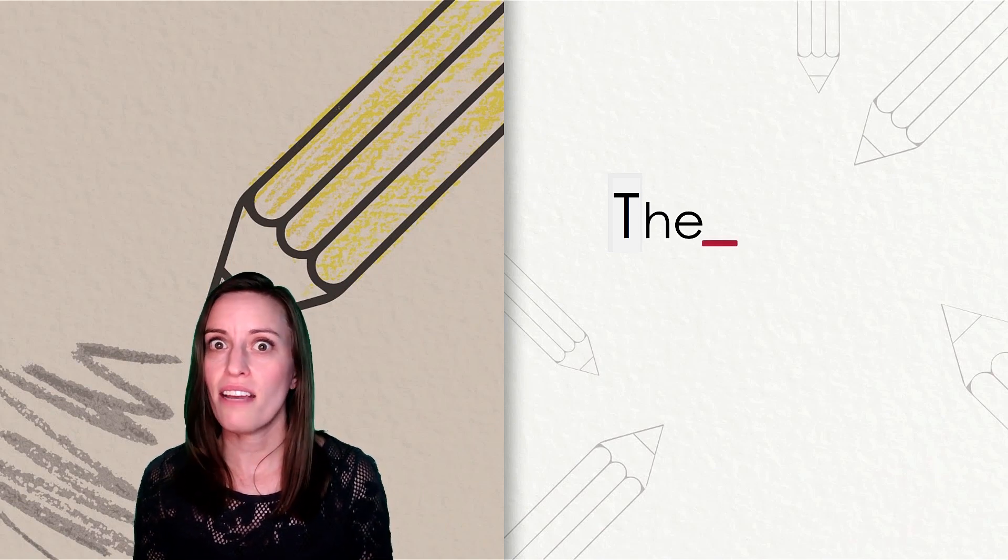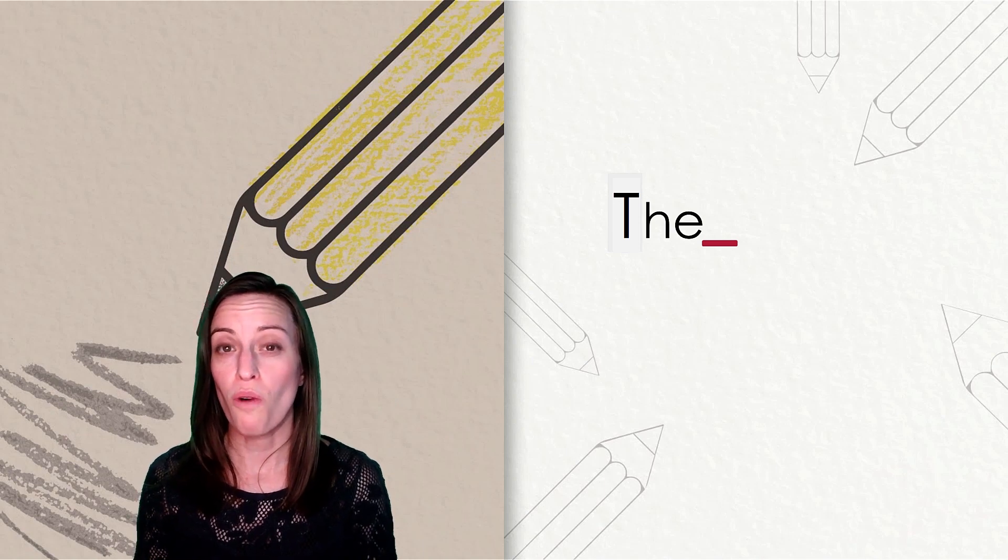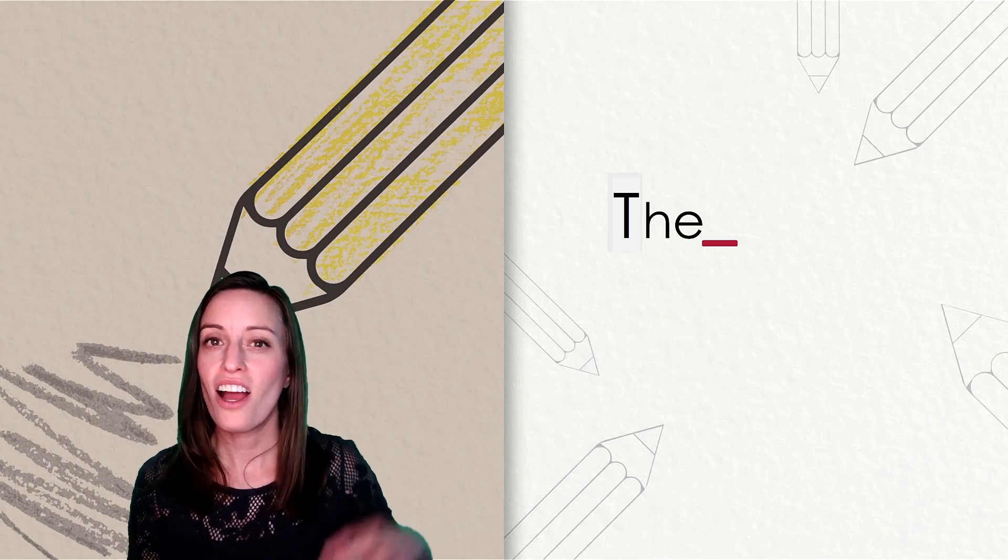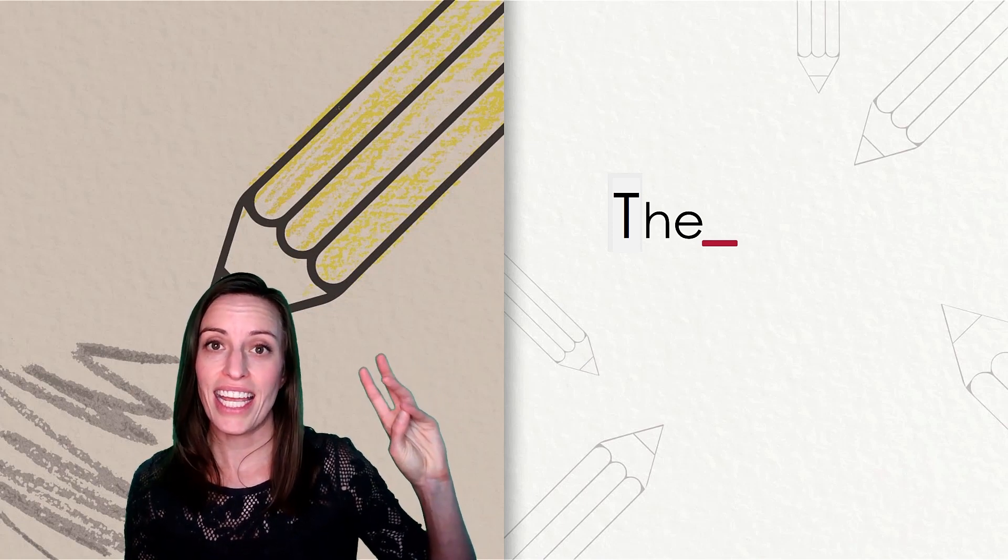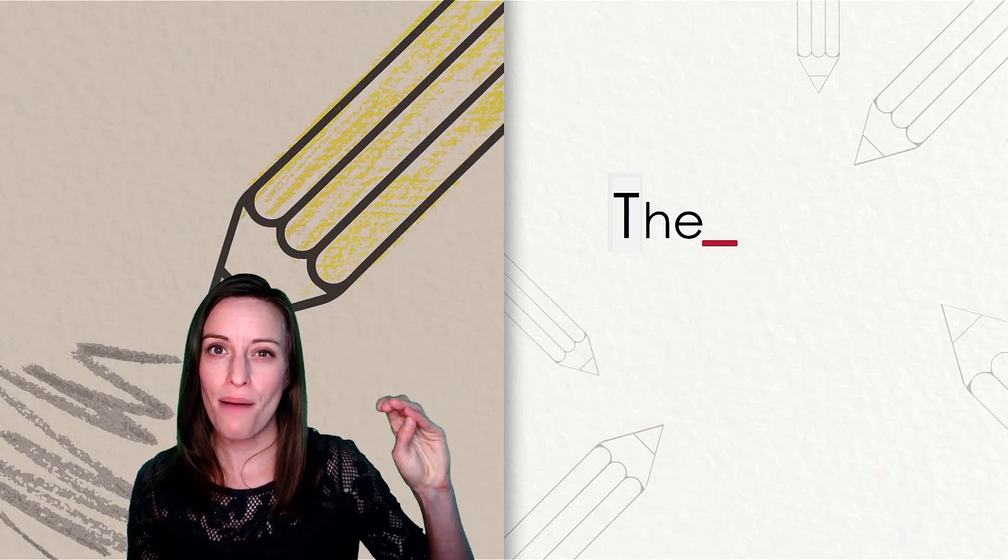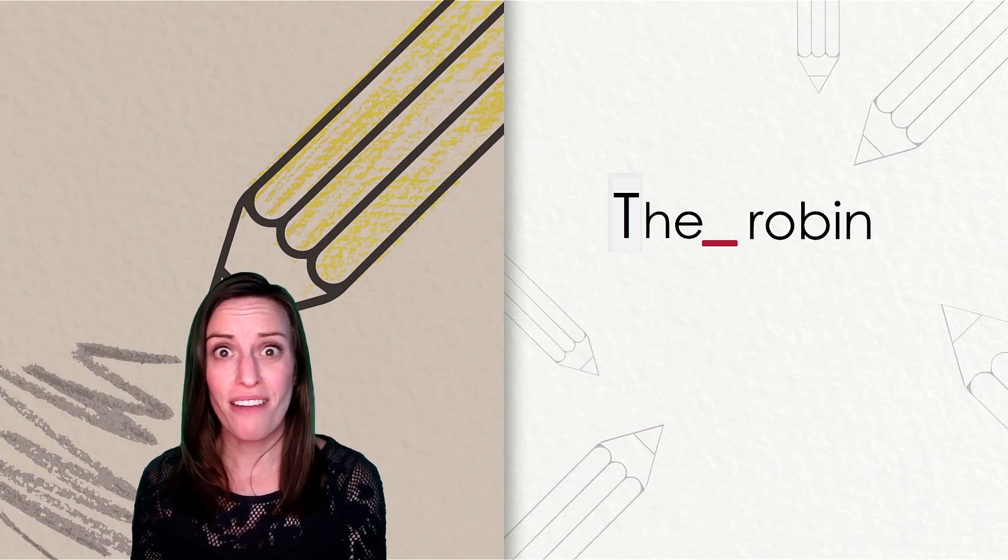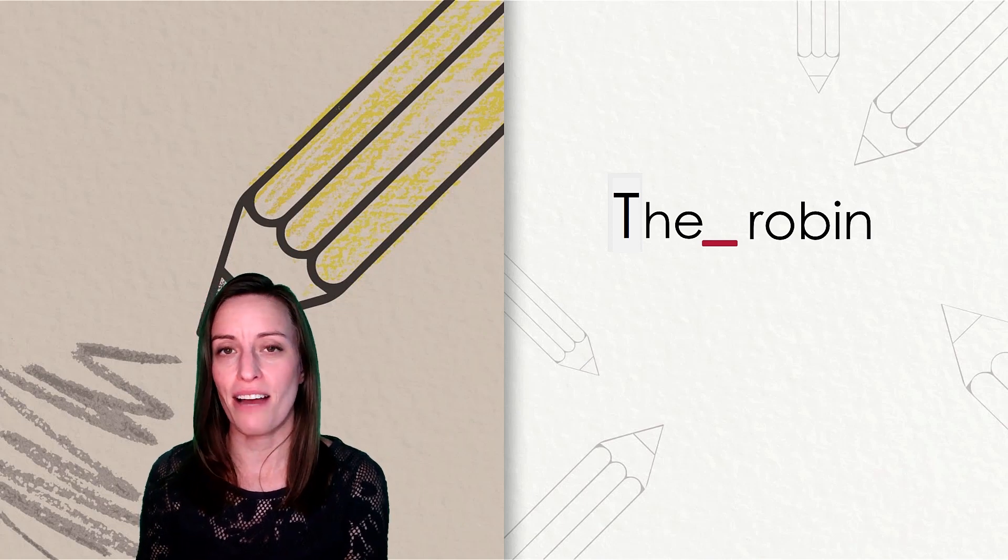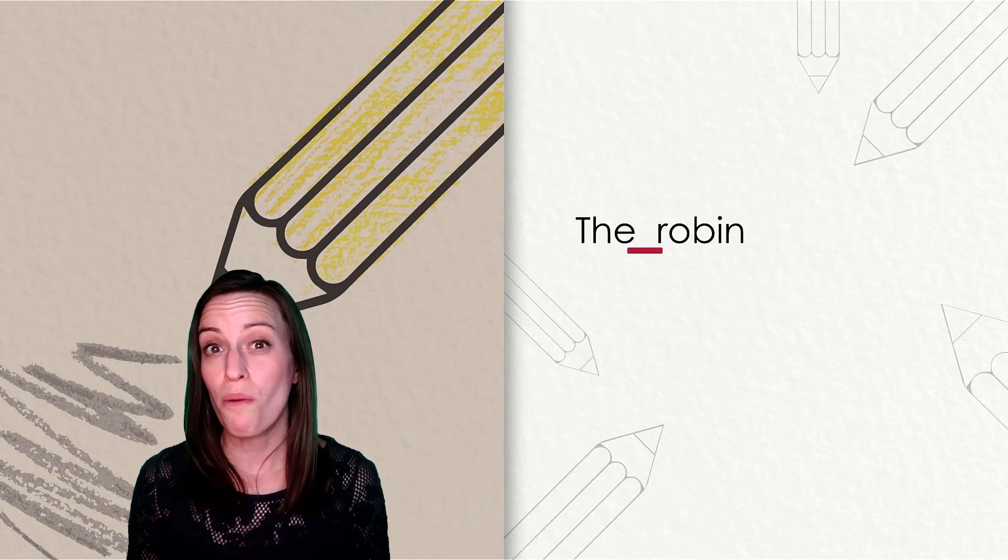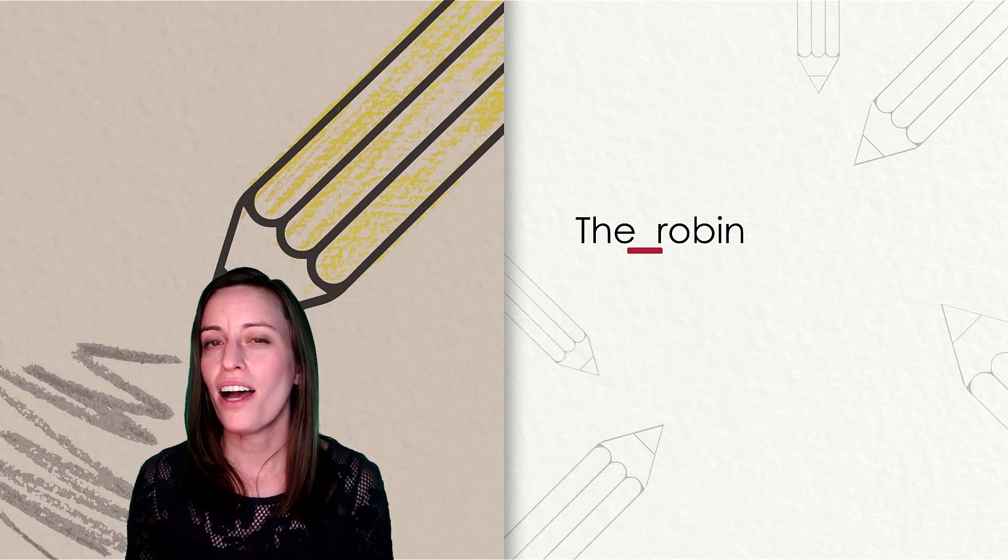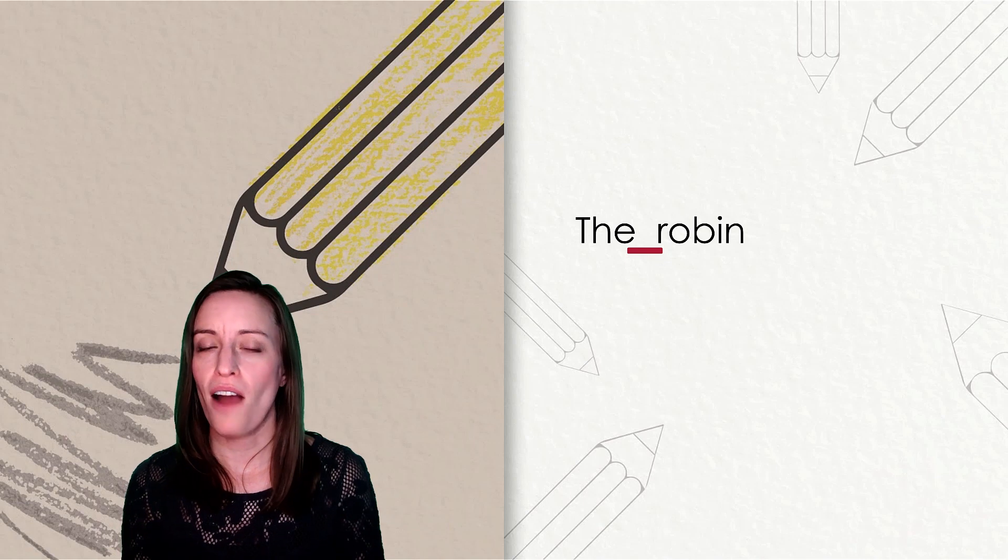Before we write our next word, what do I need to do after the word the? I need to leave a finger space. Let's tap out that word robin together. R-ah-b-in. Robin. Now take a peek. That word has five letters and five sounds. Let's go ahead and write what we have so far on your piece of paper.